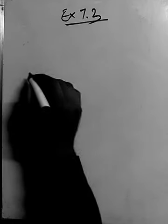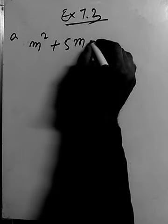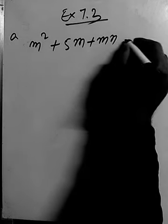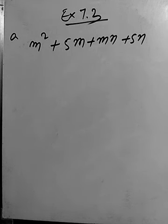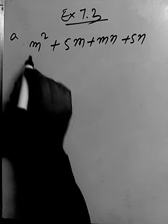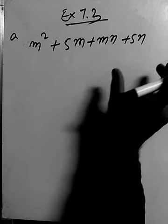This is from exercise 7.3, question E: m squared plus 5m plus mn plus 5n. We have four terms and there is no common factor for all the terms. So we are going to make groups. We make the first two terms as one group and the last two terms as another group.